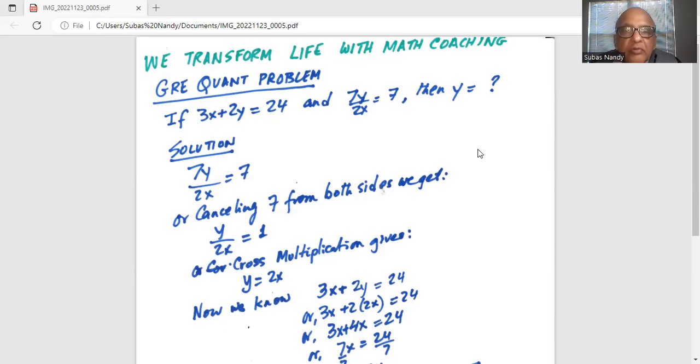So we will cancel 7 from both sides to get y divided by 2x equals 1. Then we'll do cross multiplication to get y equals 2x times 1, or y equals 2x.